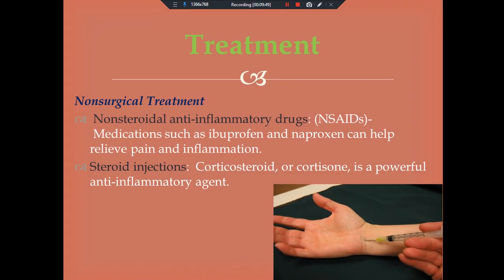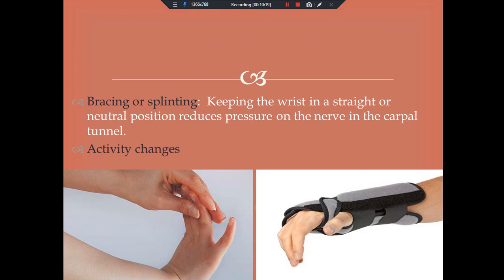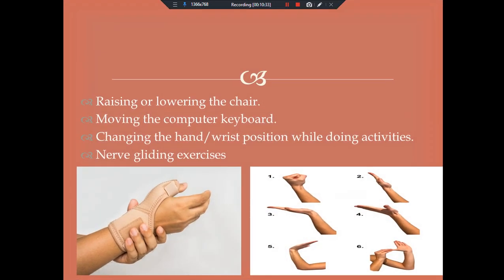There are two types of treatment: non-surgical and surgical. Non-surgical treatments include NSAIDs — non-steroidal anti-inflammatory drugs such as ibuprofen and naproxen — to help relieve pain and inflammation. Steroid injections: corticosteroids or cortisone are powerful anti-inflammatory agents. Bracing or splinting keeps the wrist in a straight or neutral position to reduce pressure on the nerve in the carpal tunnel. Activity changes include raising or lowering the chair, moving the computer keyboard, and changing hand or wrist positions while doing activities. Nerve gliding exercises are also recommended.